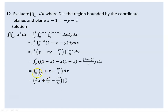The integral of 1 over 2 is x over 2, the integral of x is x squared over 2, and the integral of x squared is x cubed over 3. After evaluation: one over two minus one over six. One over two plus one over two makes one, and one minus one over six gives five over six. So the triple integral of dV equals five over six.